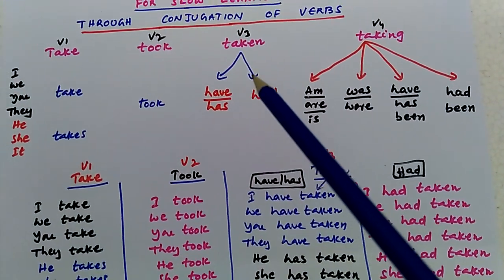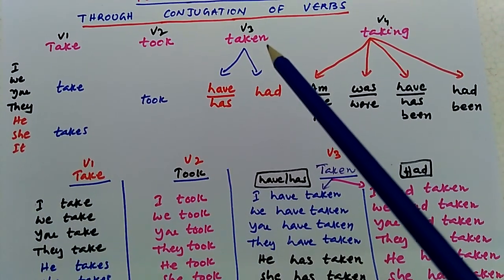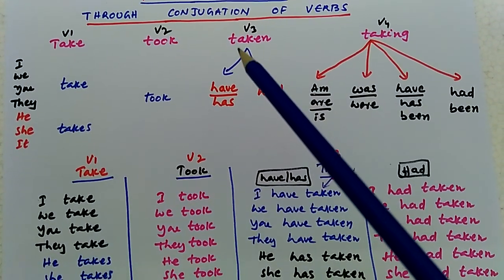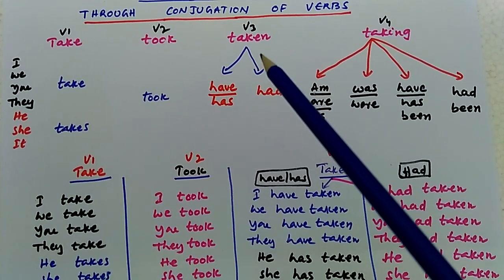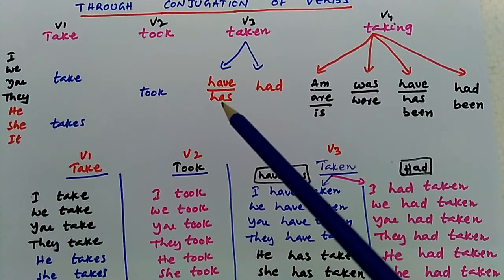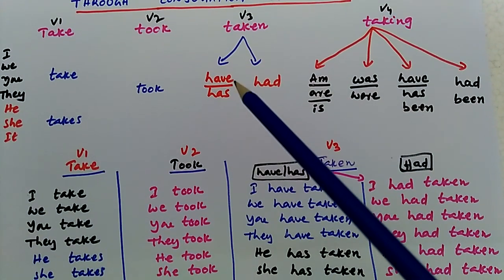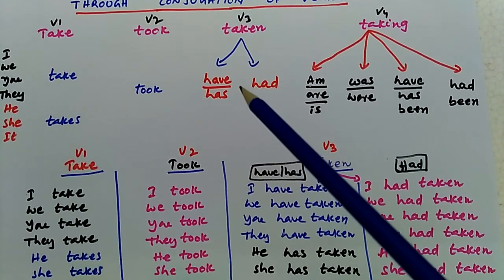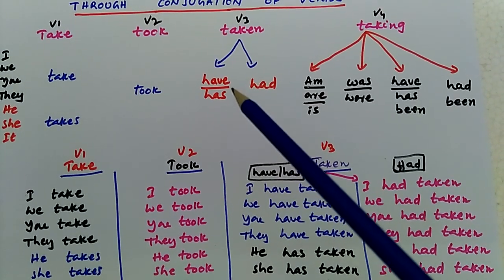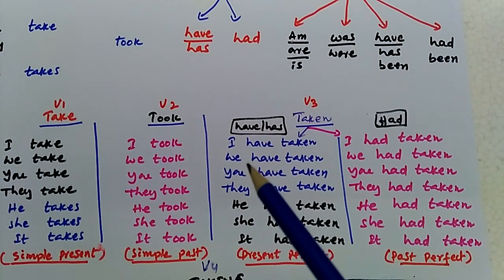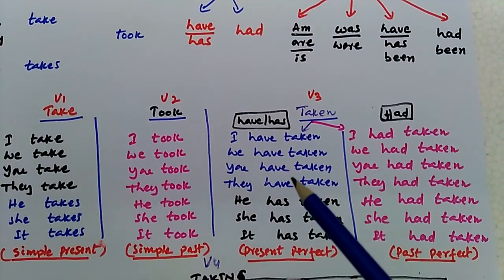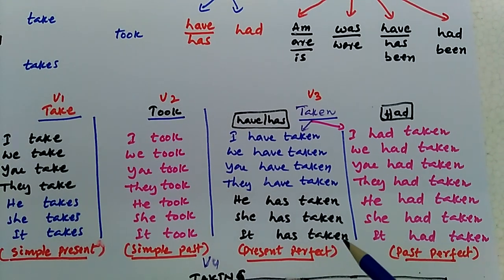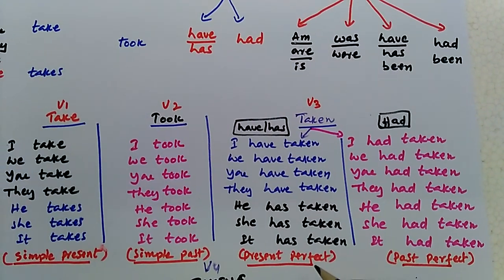And next, verb three — that is 'taken'. In case of verb three, we cannot directly add pronouns like 'I taken, we taken, you taken, they taken'. We need to add certain words: have, has, or had. By adding have or has to verb three, we get the table: I have taken, we have taken, you have taken, they have taken, he has taken, she has taken, it has taken. This is called present perfect.